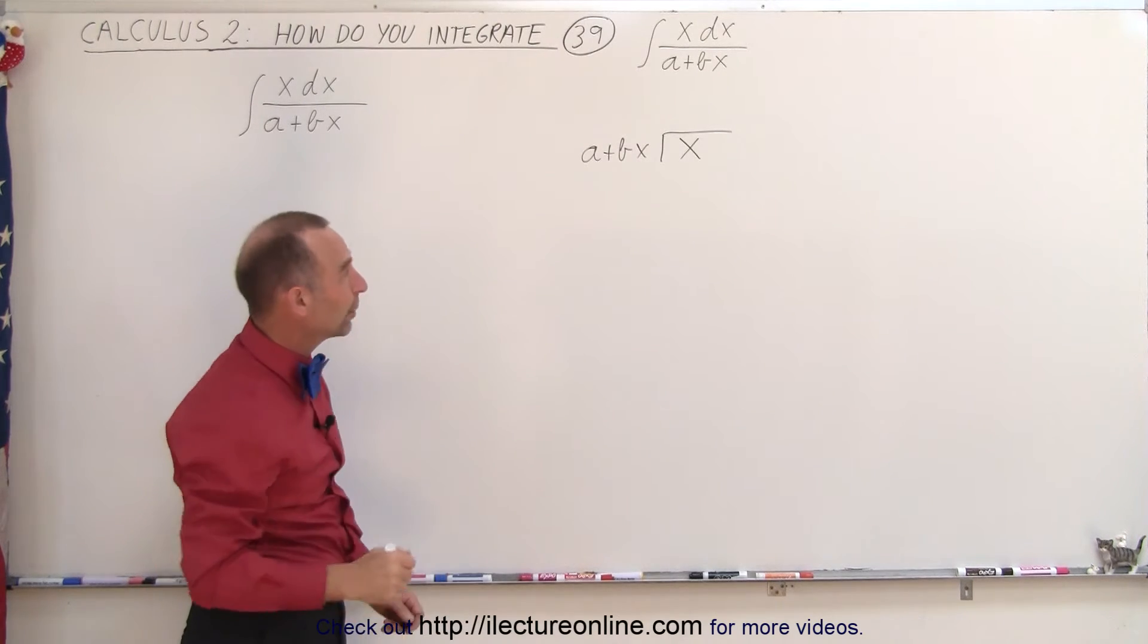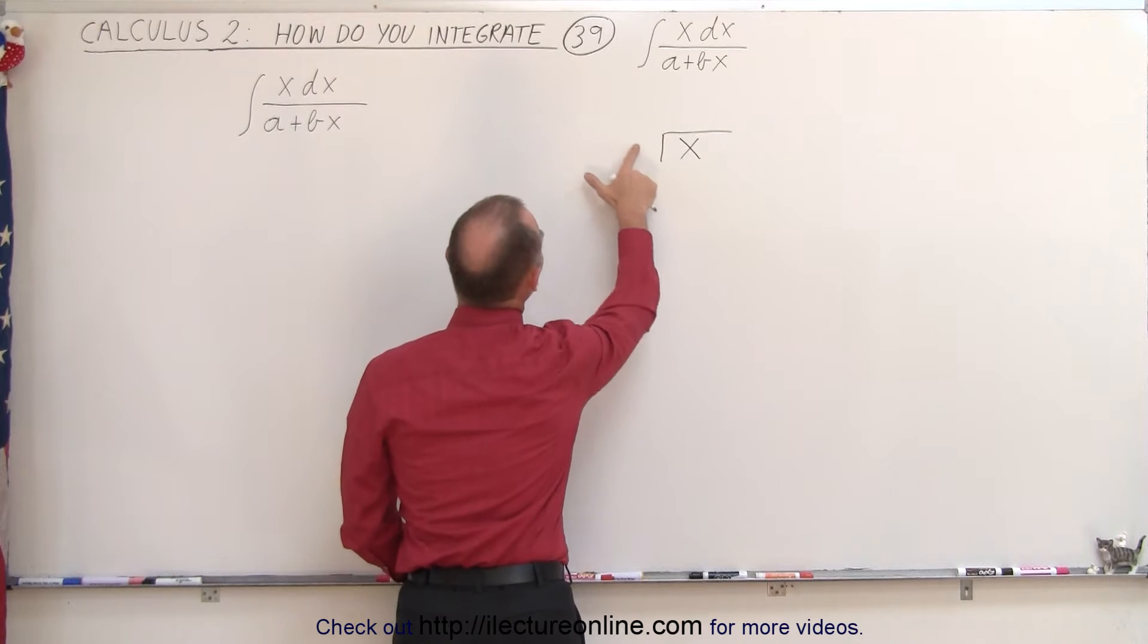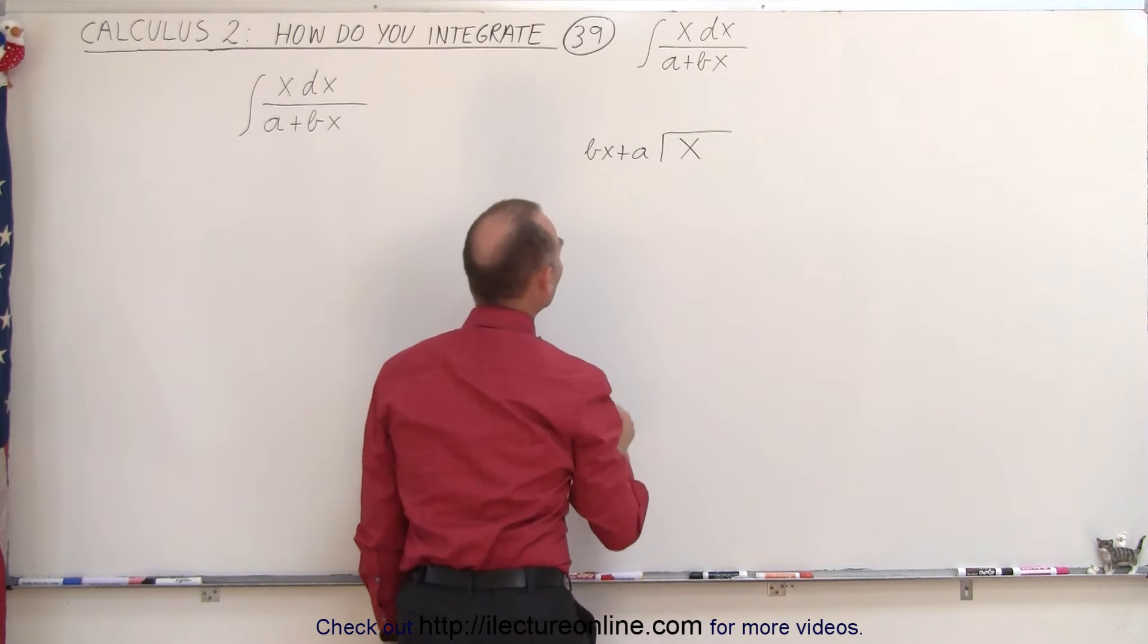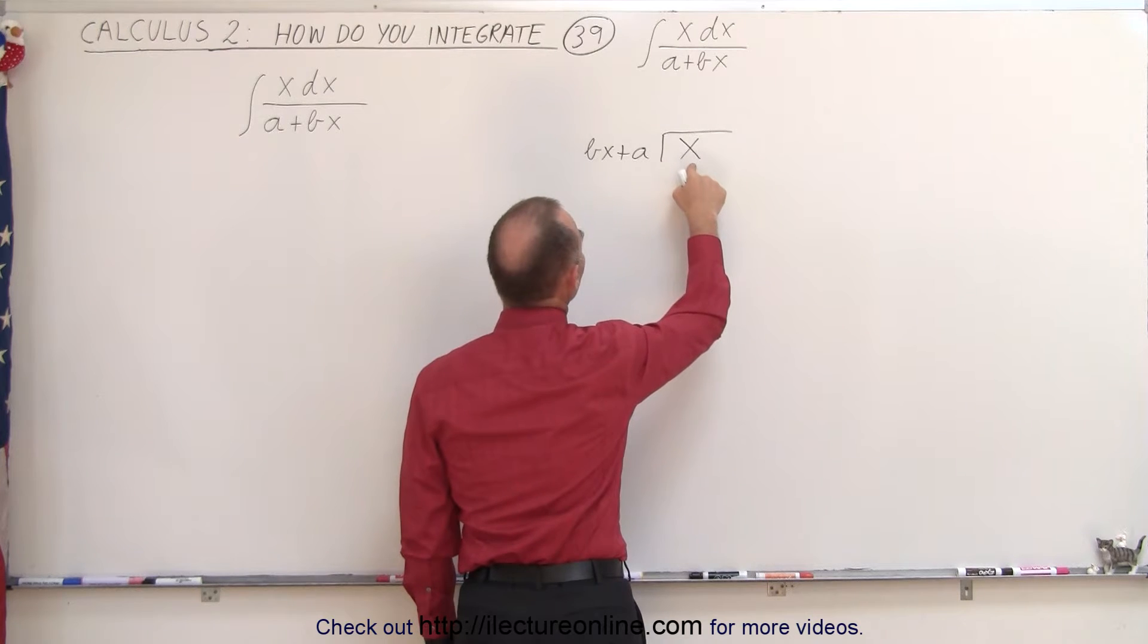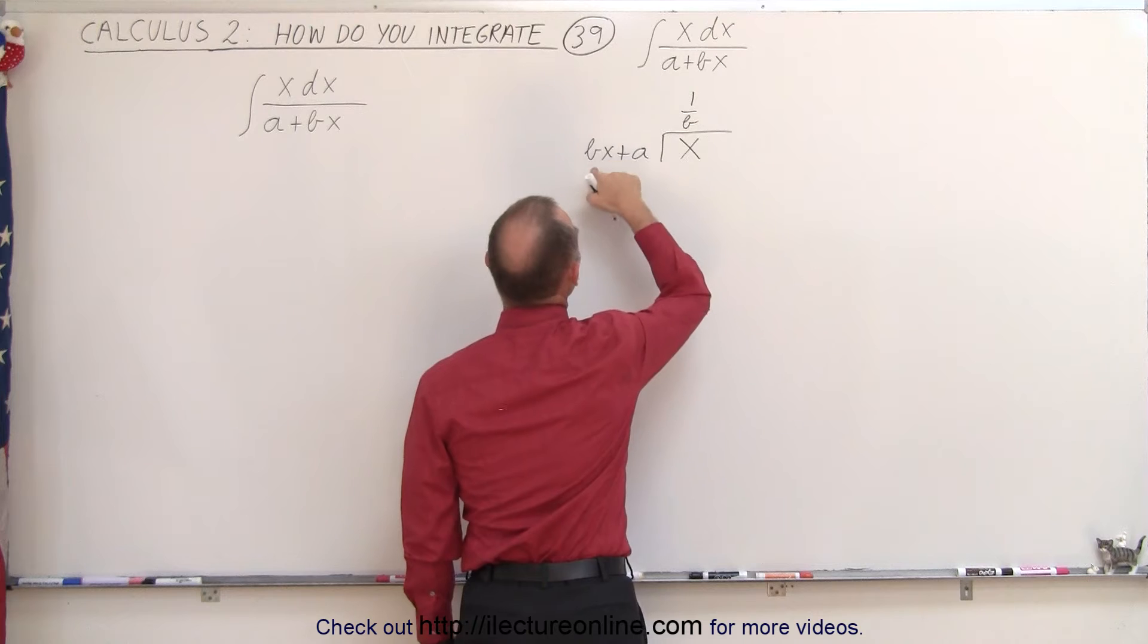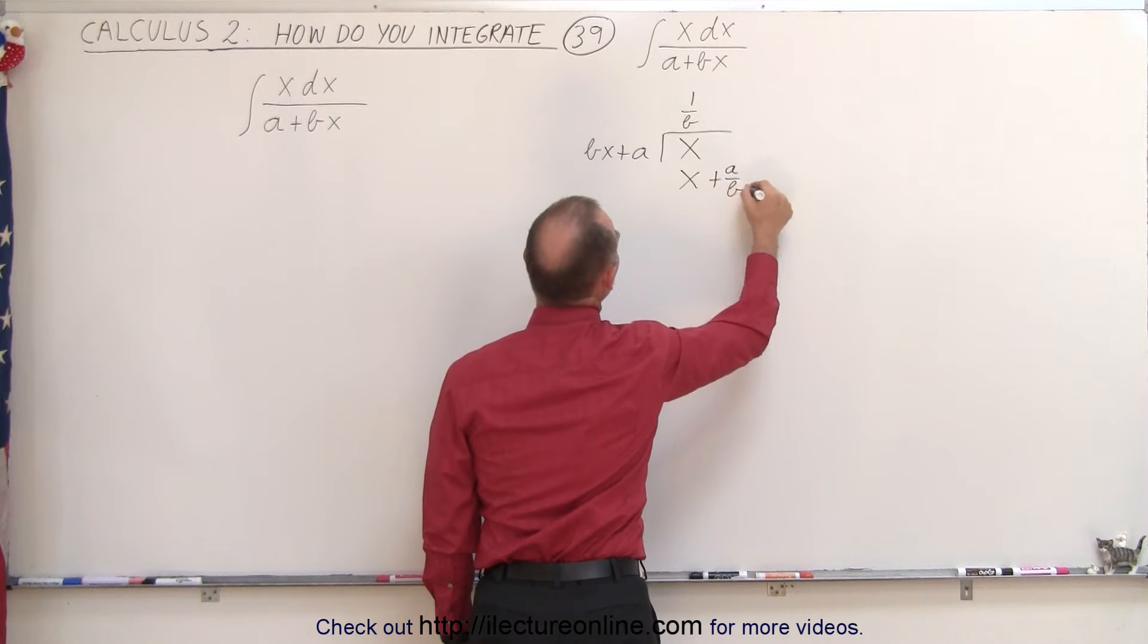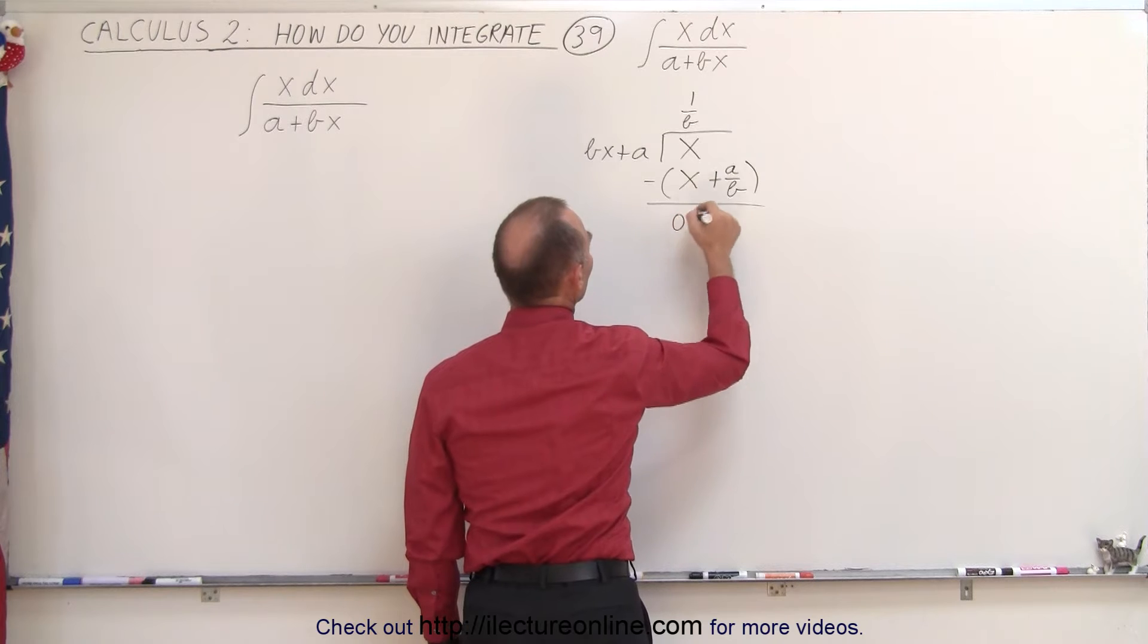Well, how do you do that? First of all, what we might want to do is interchange these. Instead of writing a plus bx, we'll write bx plus a, so that's in descending order. And now you say to yourself, what must I multiply bx by in order to make it equal to x? And so that would be 1 over b. 1 over b times this gives us indeed x. And 1 over b times a gives us plus a over b. And then we subtract this from what's above. x minus x is 0.